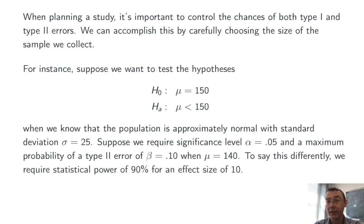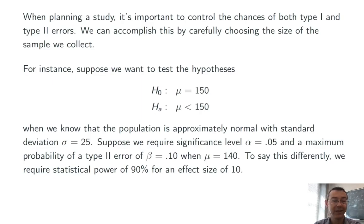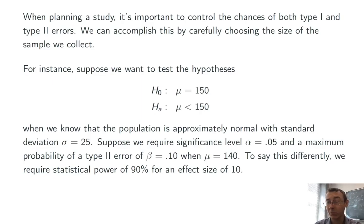To say this latter statement slightly differently, we're going to want a statistical power of 90% for an effect size of 10. By the way, both of these numbers, alpha equals 0.05 and beta equals 0.10, are reasonably standard. I think beta equals 0.20 is even a little bit more common.